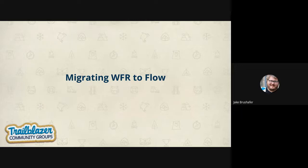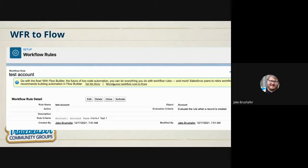The first feature coming out is a tool that allows you to migrate a workflow rule to a flow. In your existing workflow rules, there's a little button that lets you migrate your workflow rules to flows. It actually takes a workflow rule and creates a flow out of it — they do all the conversion for you. So if you've watched a session on how to do that manually, you can just use this tool and it does it for you.